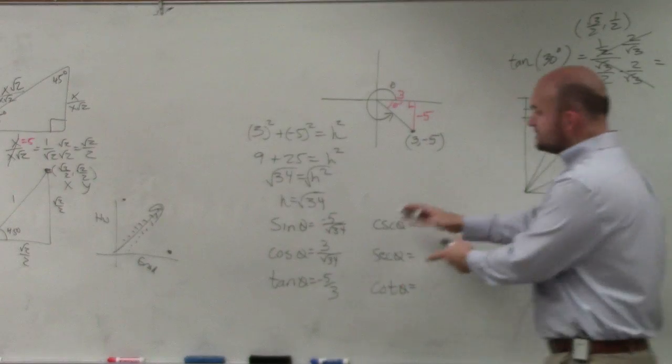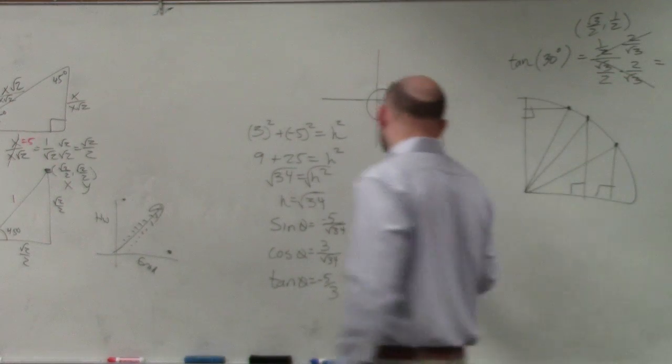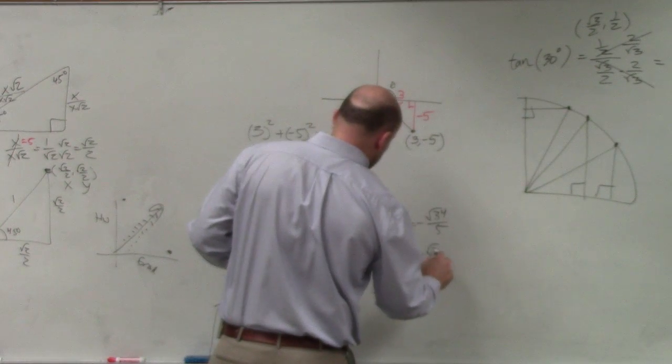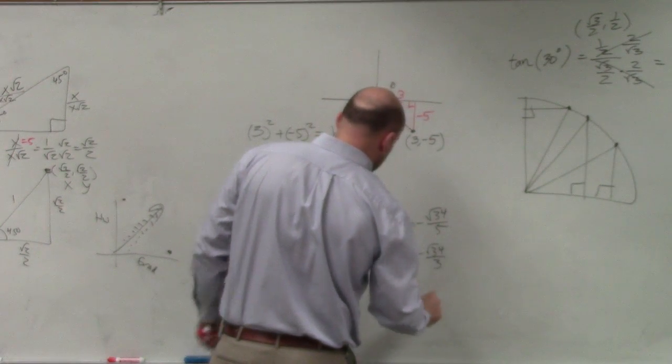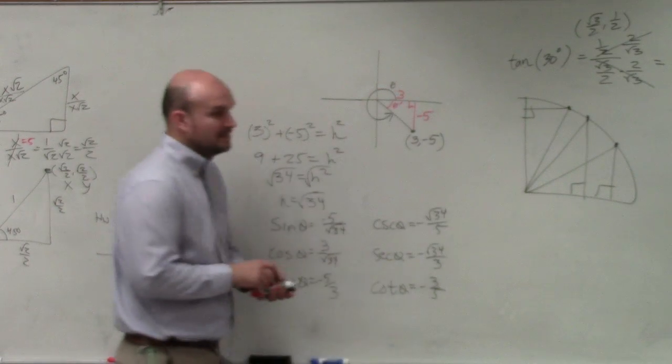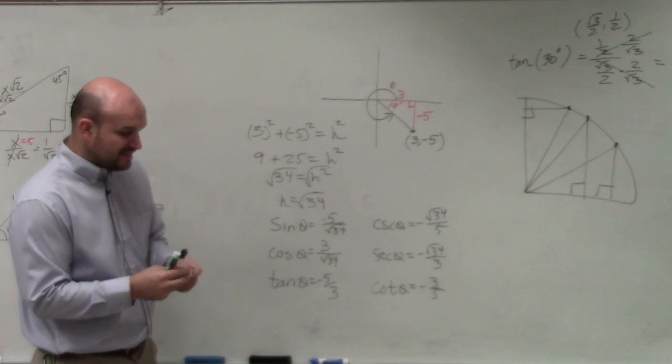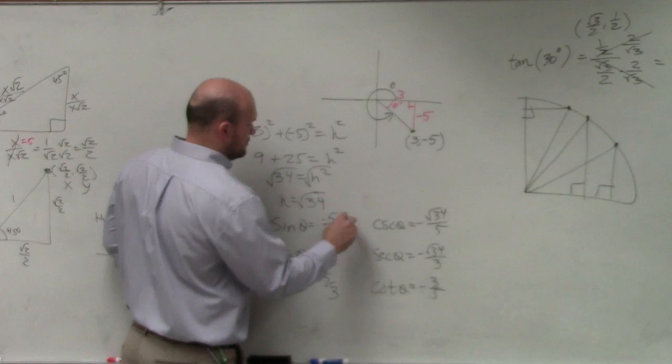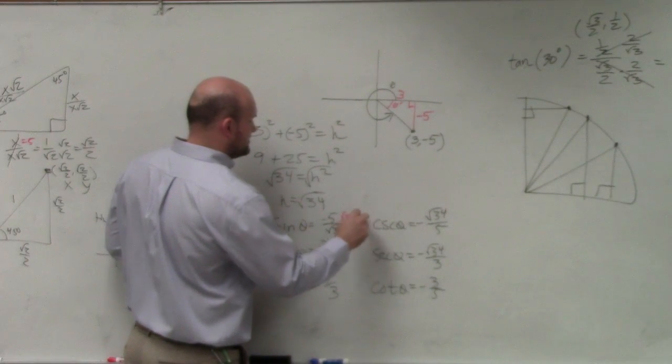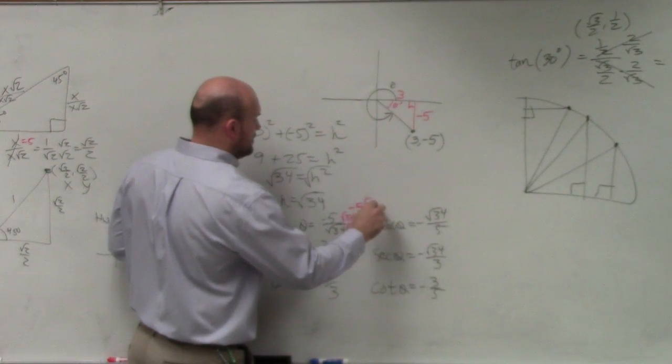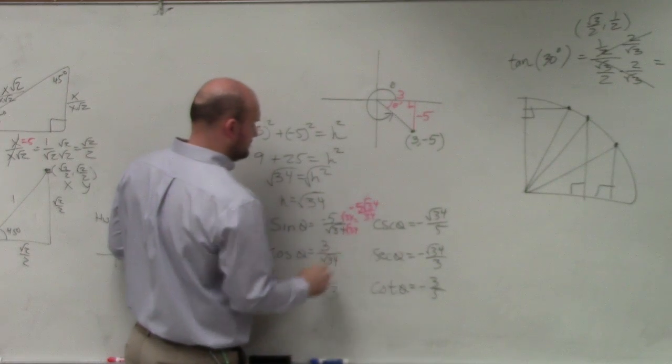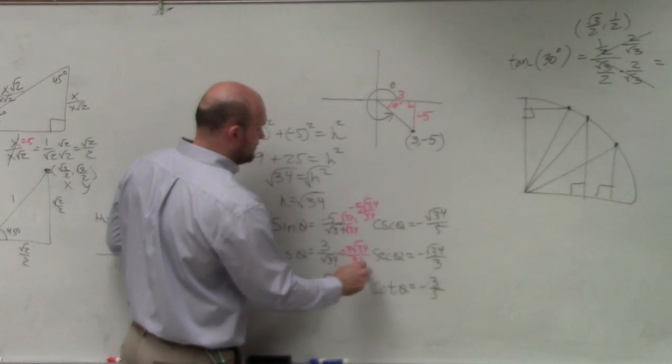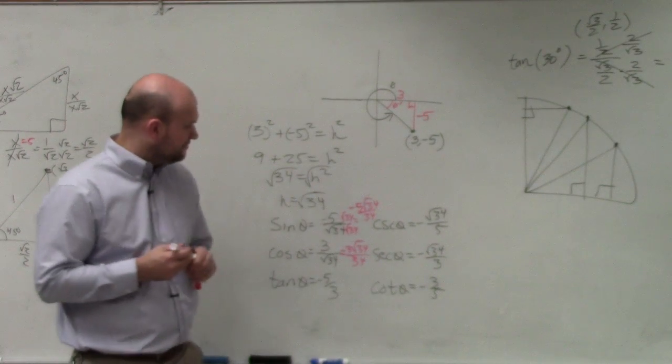My cosecant, remember, is just the reciprocal of these. So all you've got to do is just reciprocate them. So I have negative square root of 34 over 5, negative square root of 34 over 3, and negative 3 over 5. Then I just want to make sure I simplify my radicals here. So I'm going to rationalize the denominator. My final answer here is going to be negative 5 square root of 34 over 34. Here, I'm going to have 3 square root of 34 over 34. And that one is fine as well.